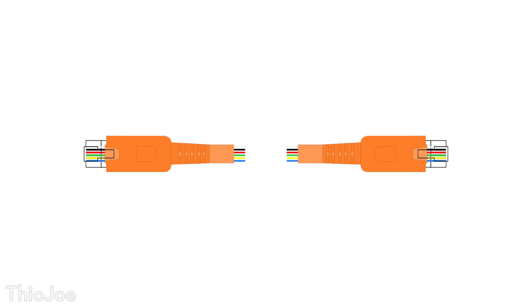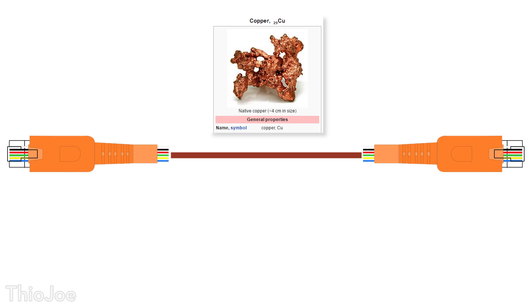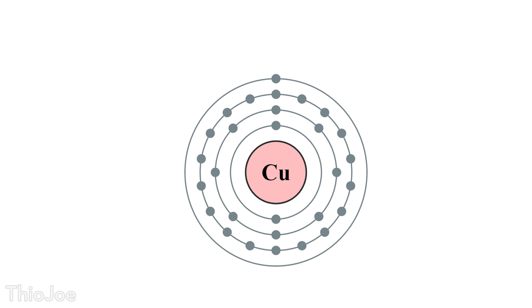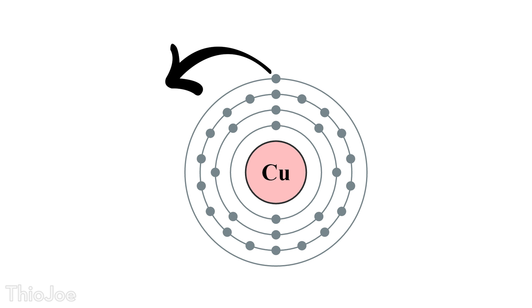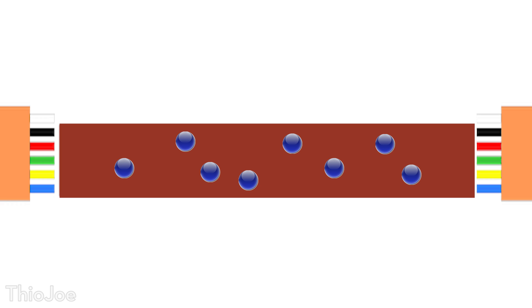Typical ethernet cables, like other wires, use copper wiring inside. Copper is a very conductive element, which makes it good for transferring electricity. From chemistry, we know that copper is a transition metal and has one electron in its outermost orbital. This means that that one electron is not tightly bound to the atom at all, and is actually prone to escaping the electron cloud and moving around. So in this copper wire in the ethernet cable, there are many extra electrons just moving around between atoms.